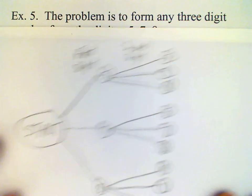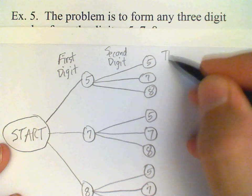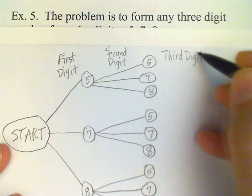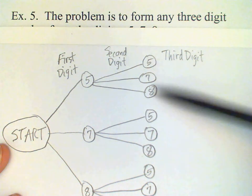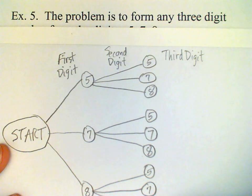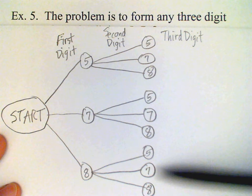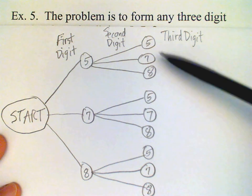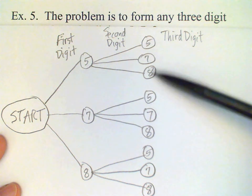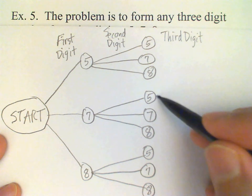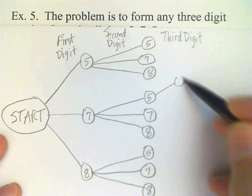Okay, and then finally for the third digit, again, I'm going to have three possibilities for each of these branches. Now, I have nine branches so far, and if I have three more possibilities tacked onto each one, that'll give me a total of 27 possibilities, right? I can't draw them all because I don't have enough room here.